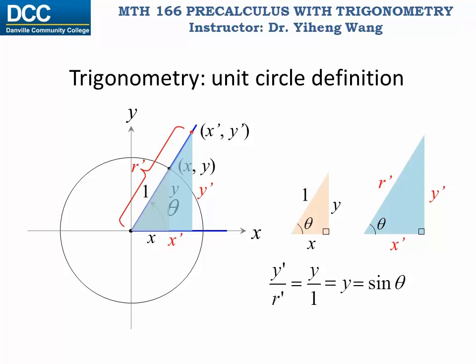Also, the ratio between x prime and r prime must equal x over 1, which simply equals x. And again, based on the unit circle definition for trigonometry, this is cosine theta. Therefore, based on this analysis, it enables us to come up with a more general definition for trigonometry. And since x prime and y prime will always have the same signs — positive or negative — as x and y, this definition can be extended to the other quadrants as well.